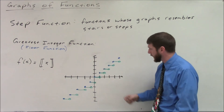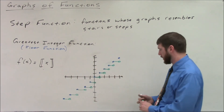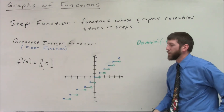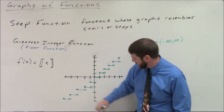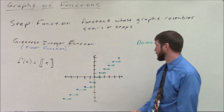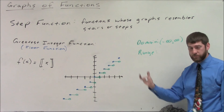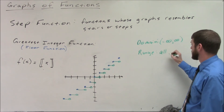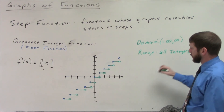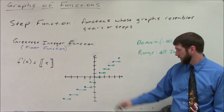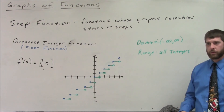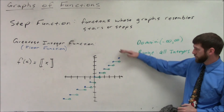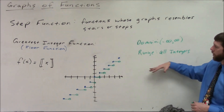One thing to note about domain and range for the greatest integer function: the domain is negative infinity to positive infinity since we account for every x value. However, the range cannot be written in interval notation because it's discontinuous — there are vertical gaps. The y values only occur at whole number increments, so the range is the set of all integers.